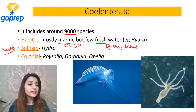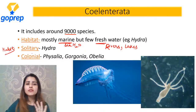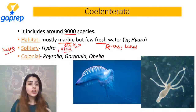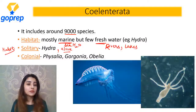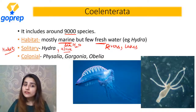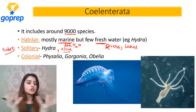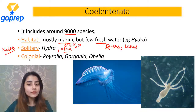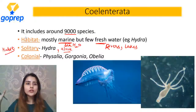Kya ye social animals hain, ya akela rehna pasand karte hain? Ismein se kuch aise hain jo bilkul akela rehna pasand karenge - they will not form any kind of colony. Example is hydra - solitary ka matlab hota hai the ones who live alone. But at the same time there are some Coelenterates jo group mein rehna pasand karte hain jo apni colony bana lenge - like Physalia, Obelia. Unko hum colonial kehte hain.